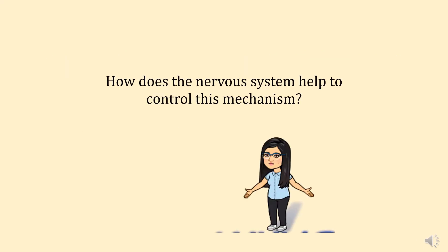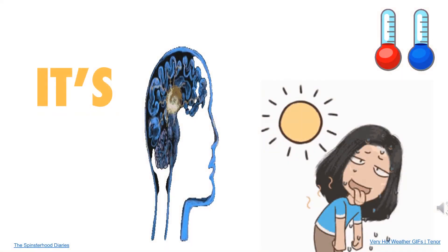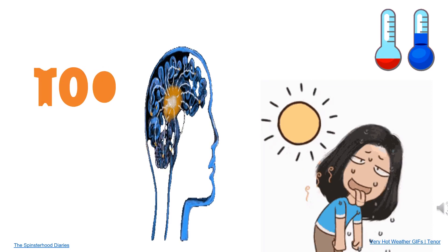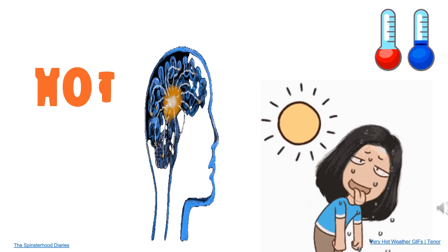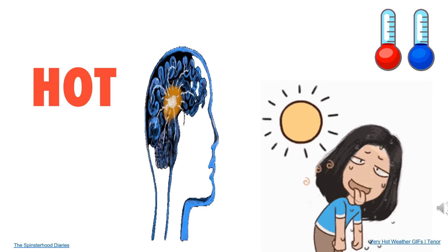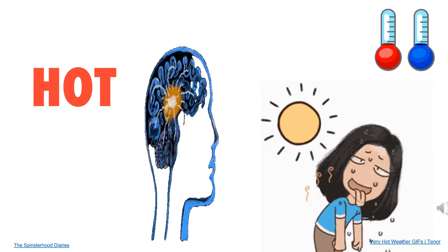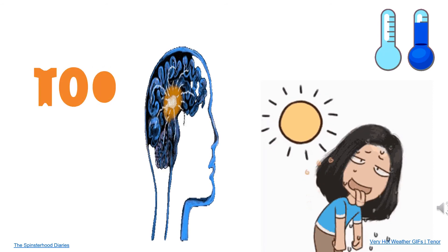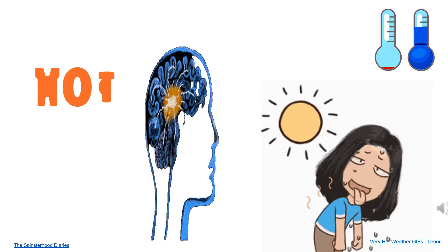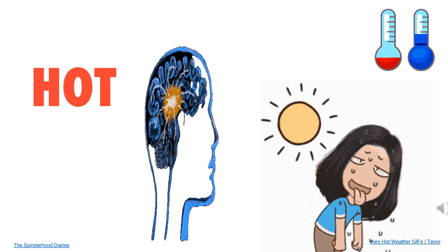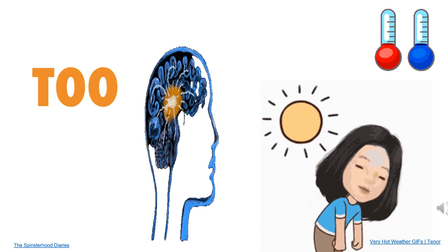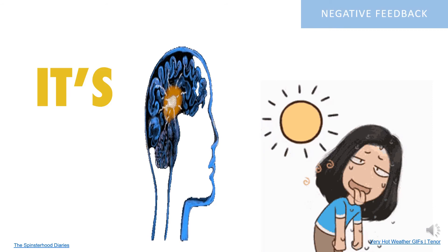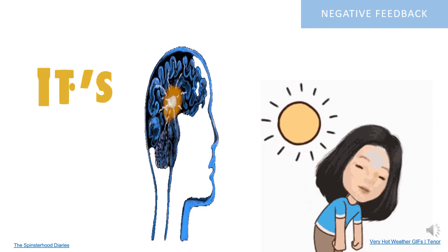How does the nervous system help to control this mechanism? When your body temperature becomes too hot, the nerves receive the stimulus. Then the brain will be activated, giving a signal to the blood vessels to dilate, causing the skin to sweat and decreasing metabolic rate. Lastly, the body temperature lowers. This is an example of a negative feedback mechanism.